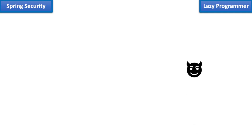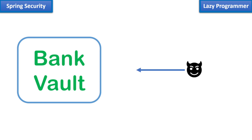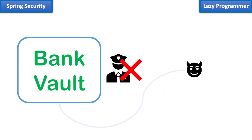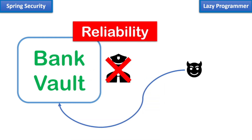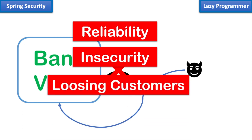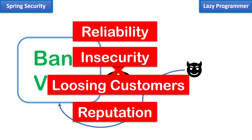Suppose there is a thief who wants to rob a bank, and suppose there is only one level of security. The guard will not allow the thief to enter the vault directly. But suppose the thief somehow bypasses or breaches that only level of security — once that level is breached, no one can do anything to stop the thief from robbing the bank, making the bank highly unreliable and insecure.